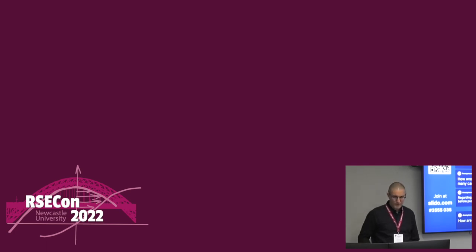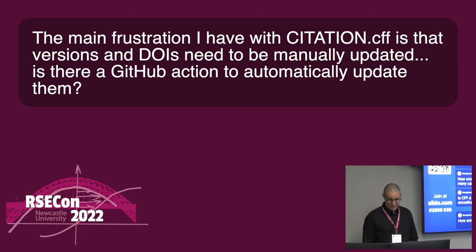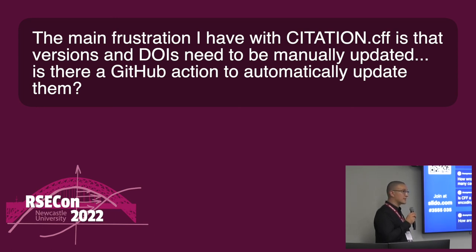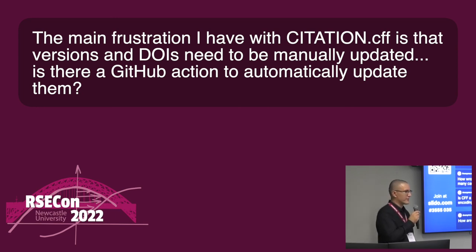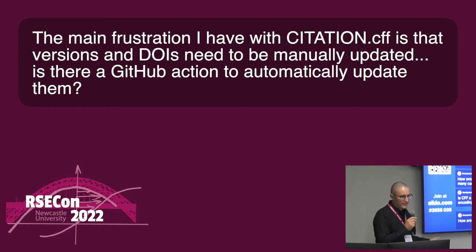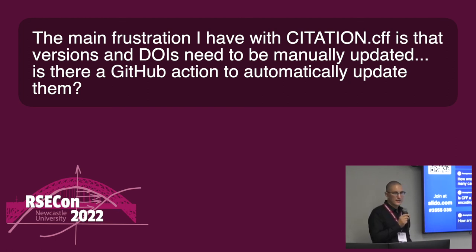Another question from Anonymous: the main frustration with citation.cff is that versions and DOIs need to be manually updated. Is there a GitHub action to automatically update them? There is not yet. It's probably in scope for the Hermes project, but it should also be easy enough to do yourself - reserving DOIs, looking up the field in the CFF file, updating the value, commit, push. So someone should create this action.